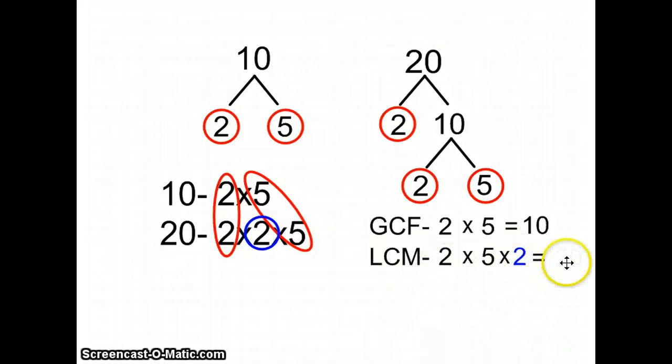So now if I multiply this all out, two times five we know is ten, then ten times two that we added equals twenty. So my least common multiple of ten and twenty is twenty. So there are two uses of prime factorization in math. Good luck. I hope this helped.